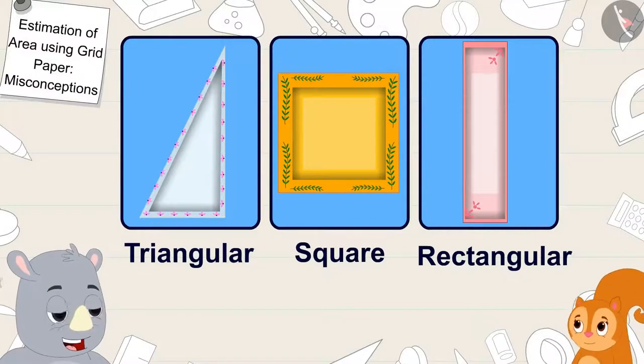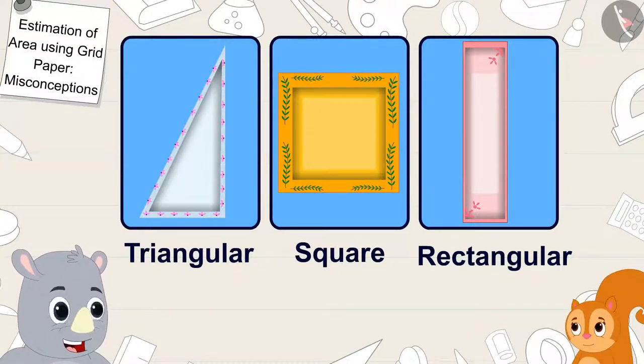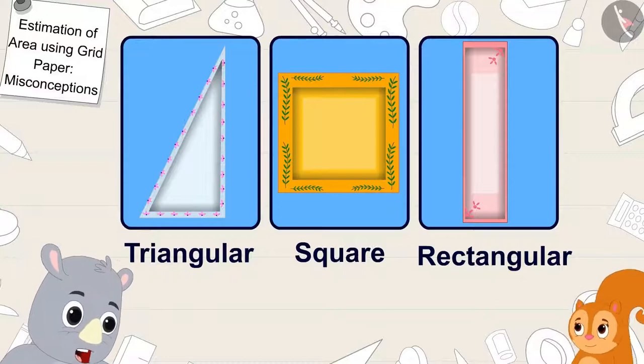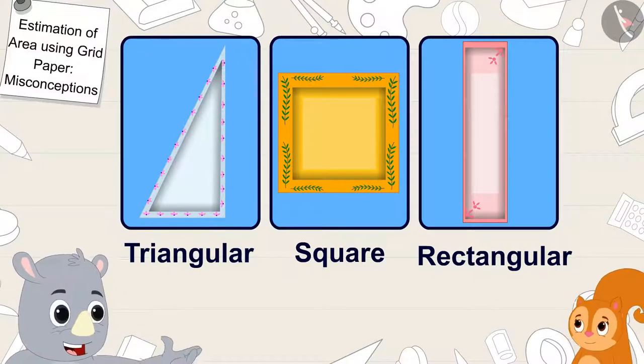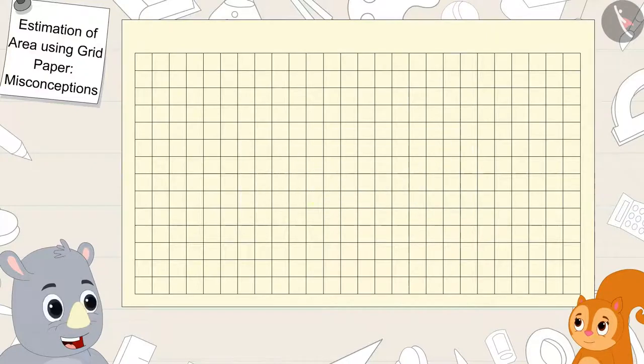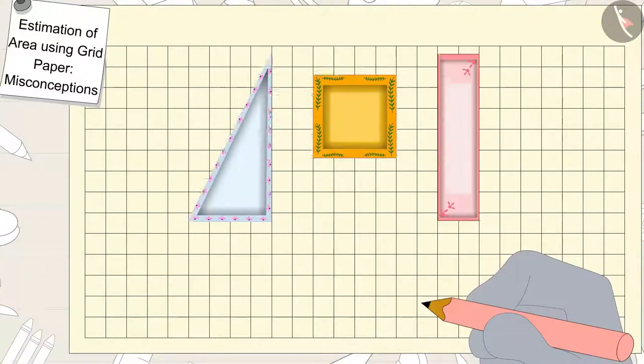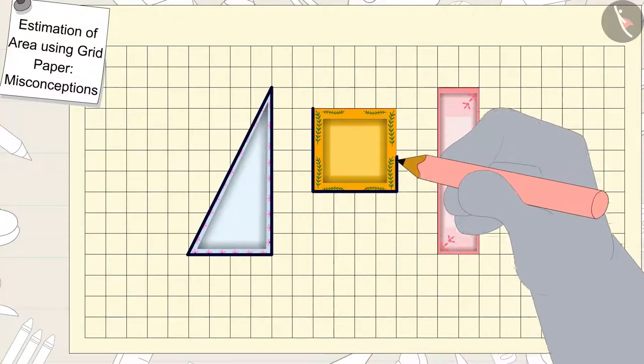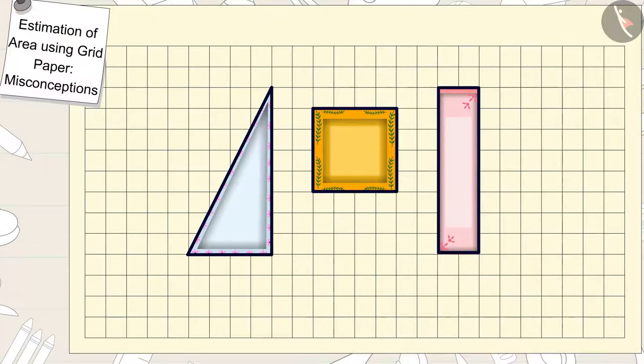Gaggoo laughed and said, No, Chanda. Come, let me explain this to you using this grid paper. After saying this, Gaggoo used a pencil to trace the outlines of the three plates onto the grid paper.